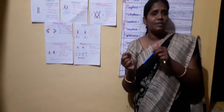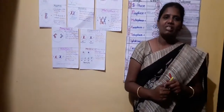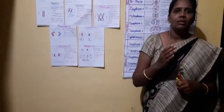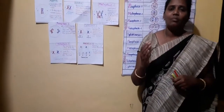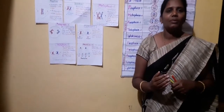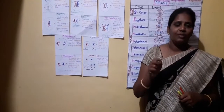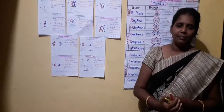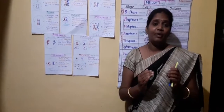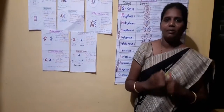The zygote will be developed into a baby. Sperm and ovum cells are in haploid state (N) and the zygote is in diploid state (2N). Let us now see the major difference between mitosis and meiosis.